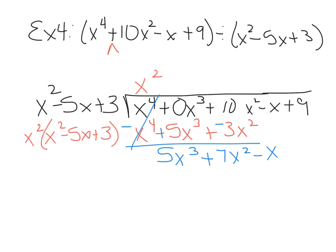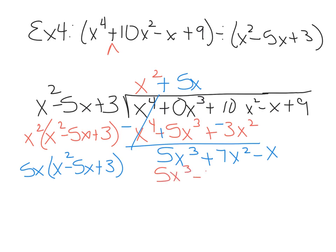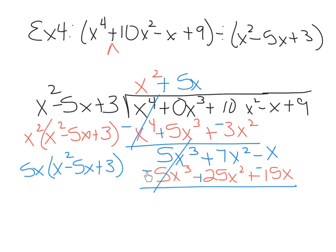x squared times what makes 5x cubed? That would be 5x. Take 5x, multiply times the divisor x squared minus 5x plus 3, and distribute — write it underneath: 5x cubed minus 25x squared plus 15x. Then change signs: negative, positive, negative. These cancel. When I add, I get 32x squared minus 16x. Bring down the last term, plus 9.